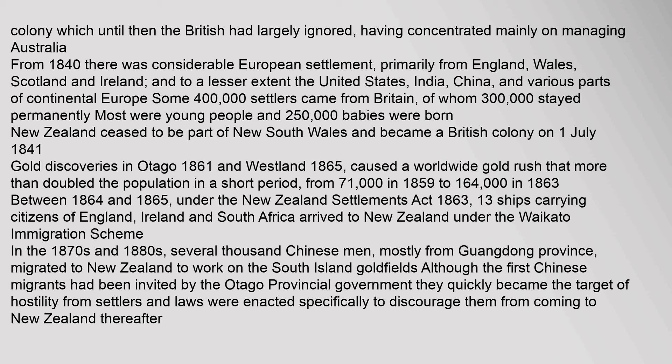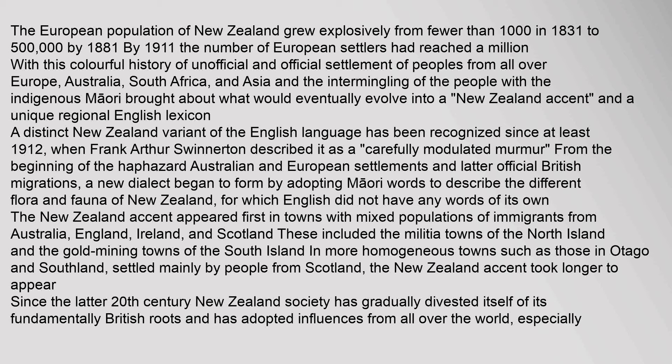In the 1870s and 1880s, several thousand Chinese men, mostly from Guangdong Province, migrated to New Zealand to work on the South Island goldfields. Although the first Chinese migrants had been invited by the Otago provincial government, they quickly became the target of hostility and laws were enacted to discourage them. The European population grew explosively from fewer than 1,000 in 1831 to 500,000 by 1881, and by 1911 had reached a million. With this colourful history of settlement from all over Europe, Australia, South Africa and Asia, and the intermingling with the indigenous Māori, what would eventually evolve into a New Zealand accent and a unique regional English lexicon emerged. A distinct New Zealand variant has been recognised since at least 1912.